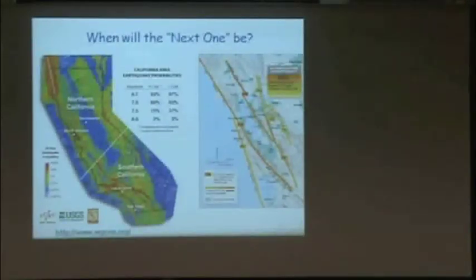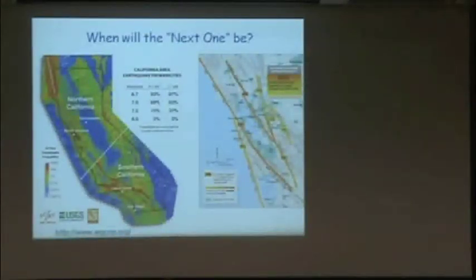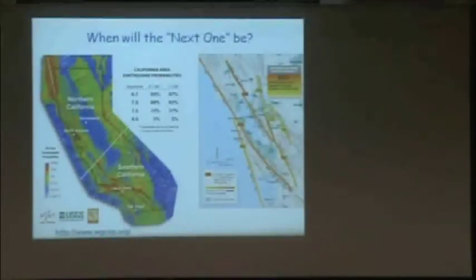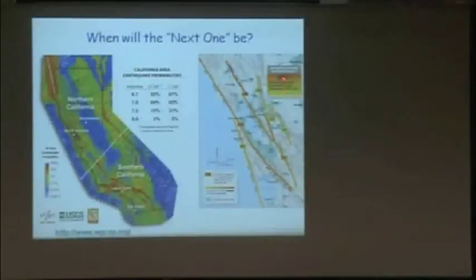We cannot predict earthquakes. All of the times somebody said there was a precursor before an event, we look for it before the next one and it doesn't happen. There is no way to predict earthquakes so far. But we can evaluate approximately when the next one is likely to be, and we've been doing that every five years or so since the early 1990s. We've put up a map of earthquake probabilities for the whole Bay Area at 63% — that there will be a big magnitude 6.7 or greater earthquake in the next 30 years.